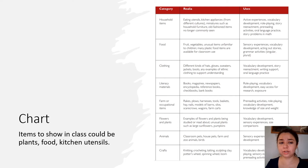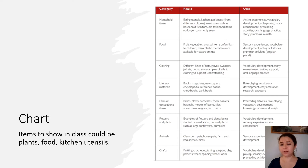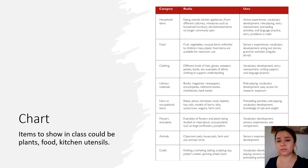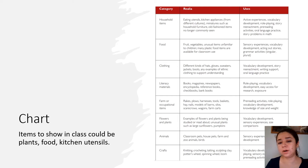Here's a chart I thought was amazing to use. You can make a realia library with categories. The book lists eight categories: household items, food, clothing, literacy materials, farm, flowers and plants, animals, and arts and crafts.